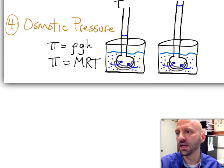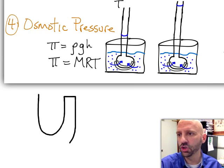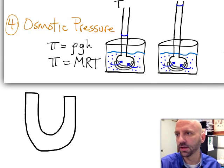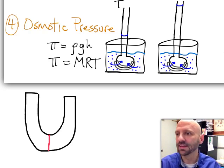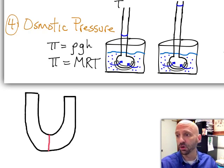So a device that kind of looks like this. So it's shaped like a U as you would expect. And it has the semi-permeable membrane at the bottom of the U-tube. So that red line represents our semi-permeable membrane.